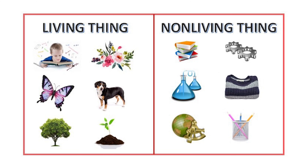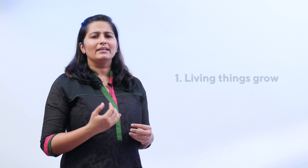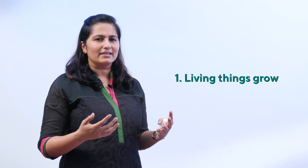Living things have life and non-living things don't. Examples of living things are ourselves — human beings, animals, plants, fishes, and birds. Number one characteristic of living things is that they grow. Yes, all living things grow.